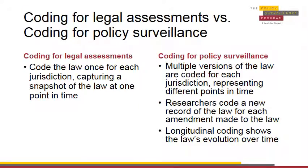When coding for legal assessments, the law need only be coded once for each jurisdiction, capturing a snapshot of what the law looks like at one point in time. However, when coding for policy surveillance, multiple versions of the law should be coded for each jurisdiction, representing different points in time. Researchers should code a new record of law for each amendment made to a relevant law. The objective of longitudinal coding is to show the law's evolution over time.